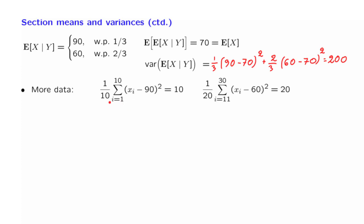Now suppose that somebody gave us this piece of information: for the first section, this is the deviation of the i-th student from the mean of that section. So this is the sum of the squares of the deviations, averaged over all the students. We will use these data to calculate certain quantities — for example, the variance of the scores in the first section. In the first section, with probability 1 tenth we pick the i-th student. This is the mean squared deviation from the mean of the section, which is exactly the variance within that section — the variance of the random variable which is the score of a random student, given that we are selecting a student from the first section.